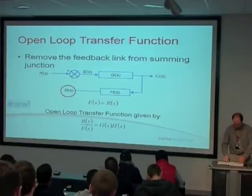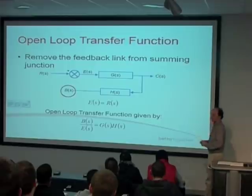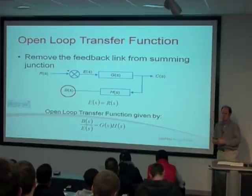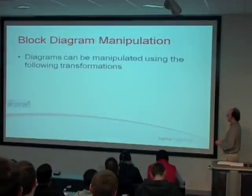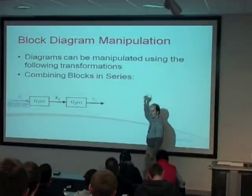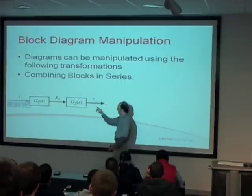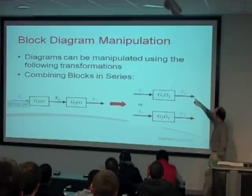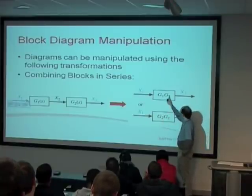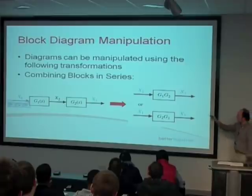Those are the fundamentals of closed loop systems. There are various ways to manipulate block diagrams because they can be a lot more complicated than a simple G and H type system. The first simple example: combining blocks in series. If your forward path transfer function had two blocks G1 and G2, the relationship between x3 and x1 is those two blocks multiplied together. To get x3 from x1, you just go G1 times G2. Multiplication is commutative, so you could say G2 times G1 - it's the same thing.